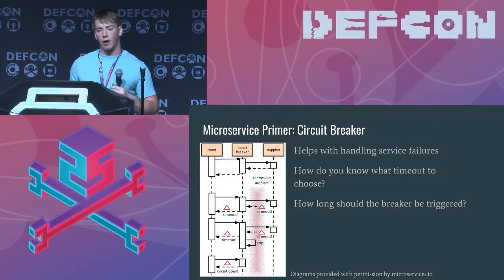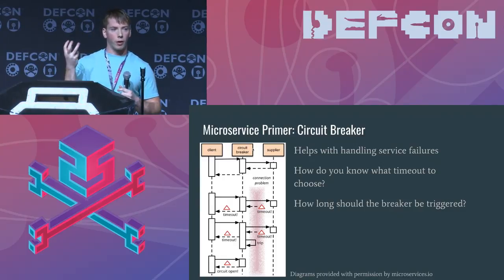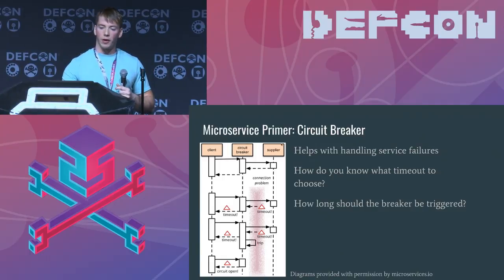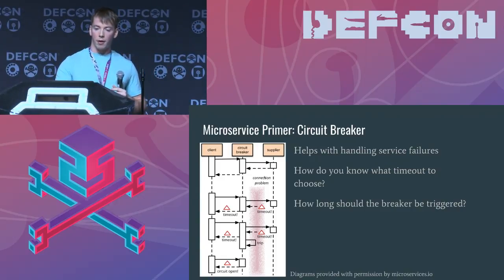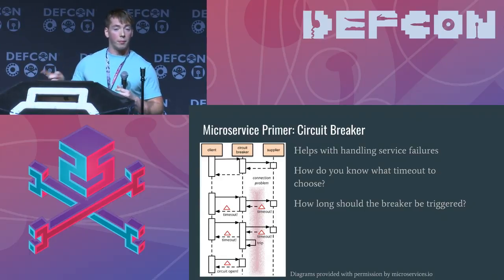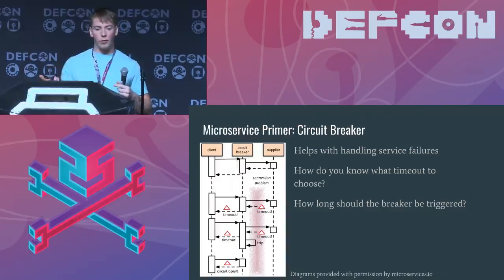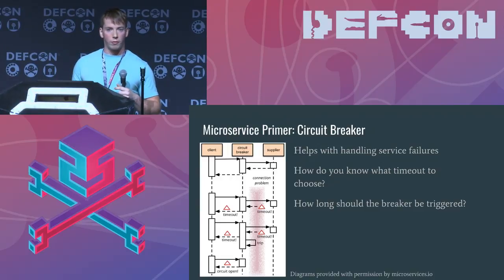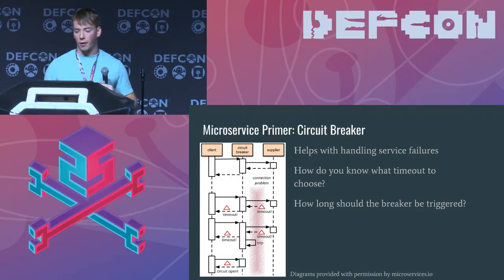Another concept is circuit breakers. Think of the circuit breaker as the gateway — the centralized API service. The supplier is like a middle tier service and the client could be your web browser. There ends up being a connection problem at some point, and the API gateway starts getting timeouts. After a certain number of timeouts are triggered, it fast fails — it triggers the circuit and says it's no longer going to try to make requests to that middle tier service, just returning a generic error, maybe a fallback experience. This gives your middle tier services time to recover. Key considerations are what timeout to choose and how long the breaker should be triggered.